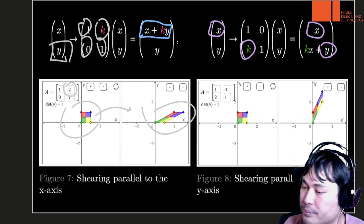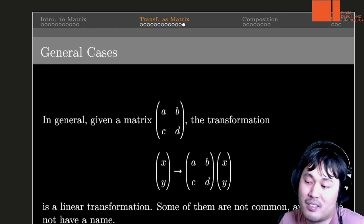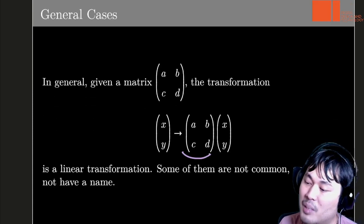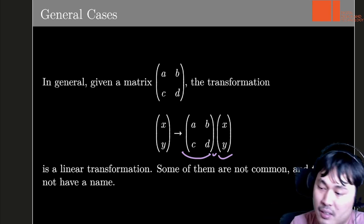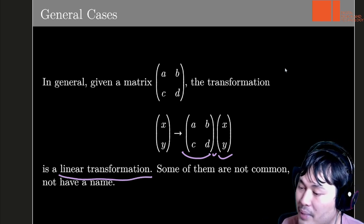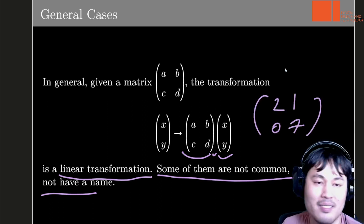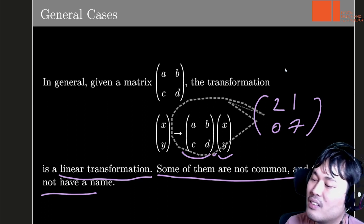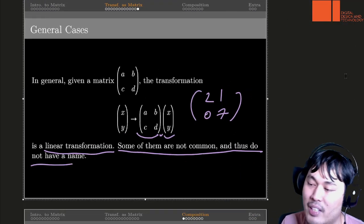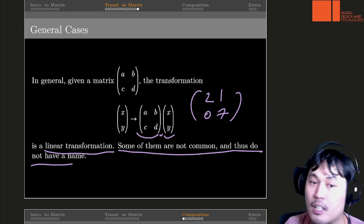As a side note, in general there are more transformations. As long as you can express it as a matrix multiplied by a vector, these are all linear transformations. Some of them are not common, so they don't have a name — you could put [2, 1; 0, 7] as a transformation matrix and do something with it, but it gives a weird shape without a nice name. And that's the end of the second section.